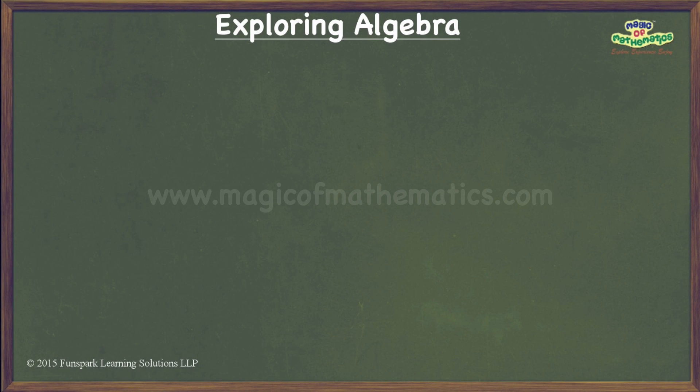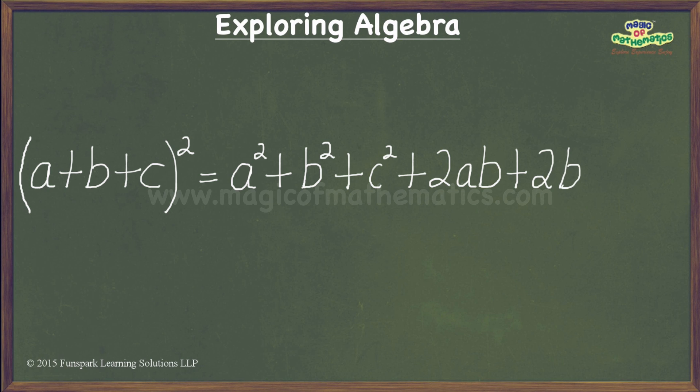In this video, I intend to give you a visual proof of the algebraic identity (a+b+c)² = a² + b² + c² + 2ab + 2bc + 2ca.